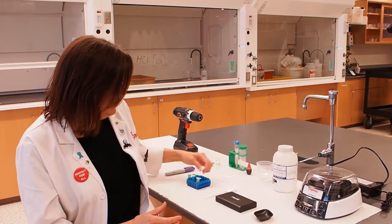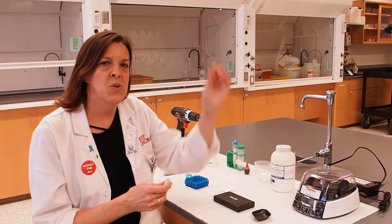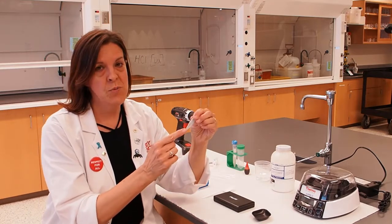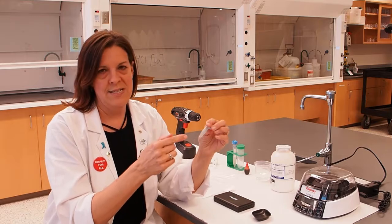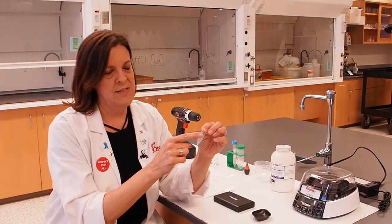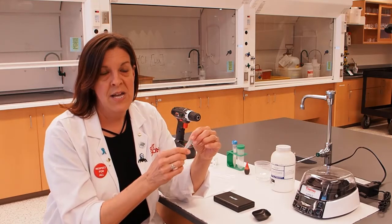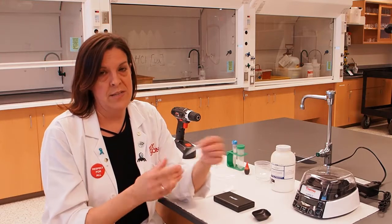What that's going to do is cause the solids or the heavier things in our sample to go to the bottom of the tube, and then the liquids or the less dense or lighter material is going to stay on the top. That's going to enable us to separate things from one another.